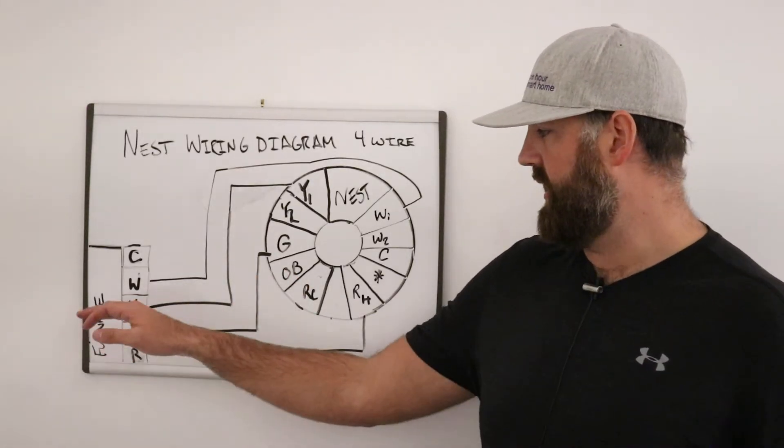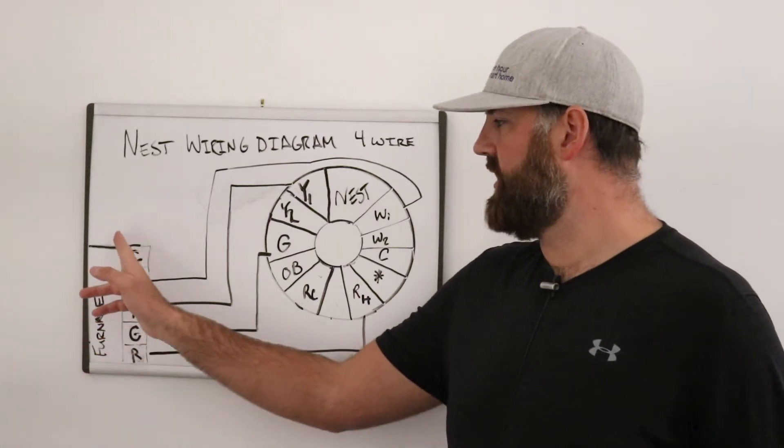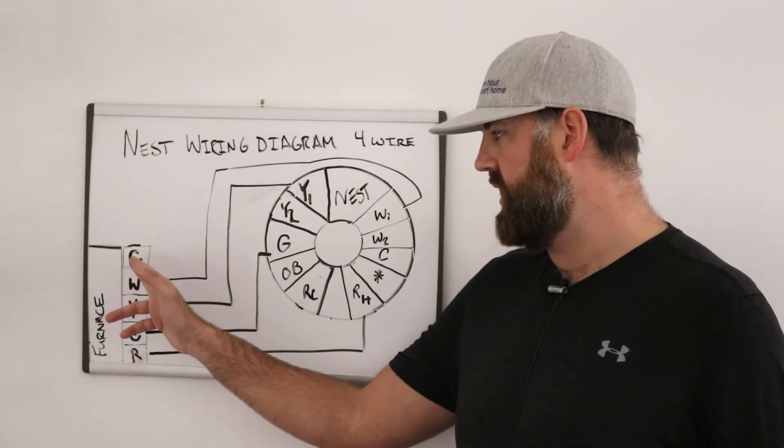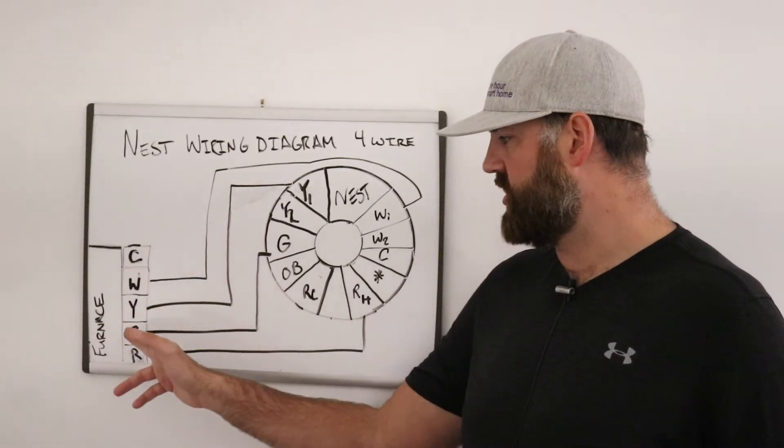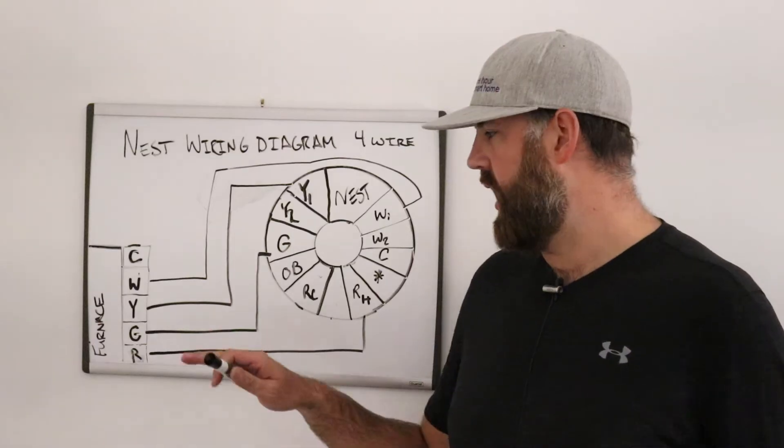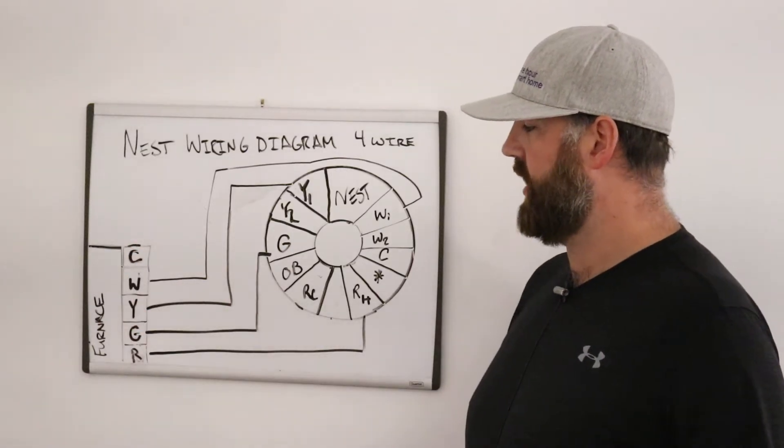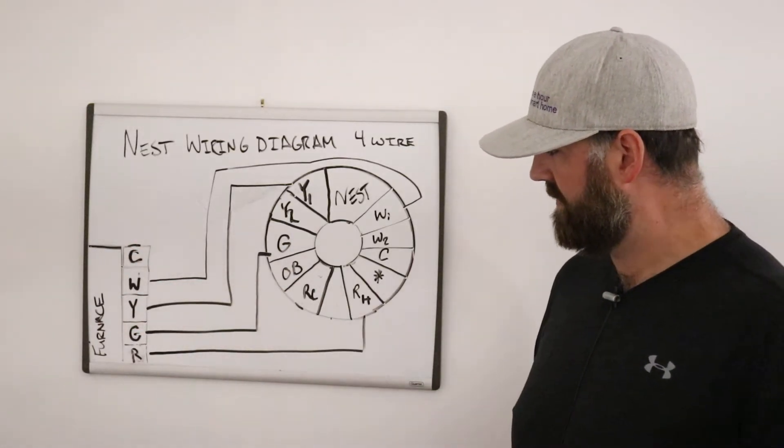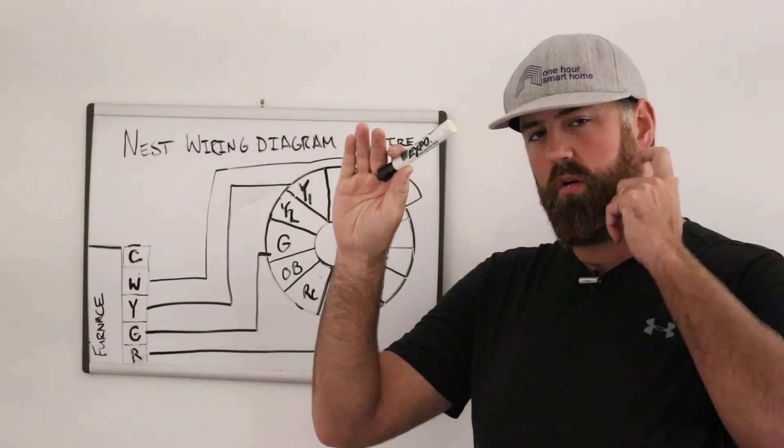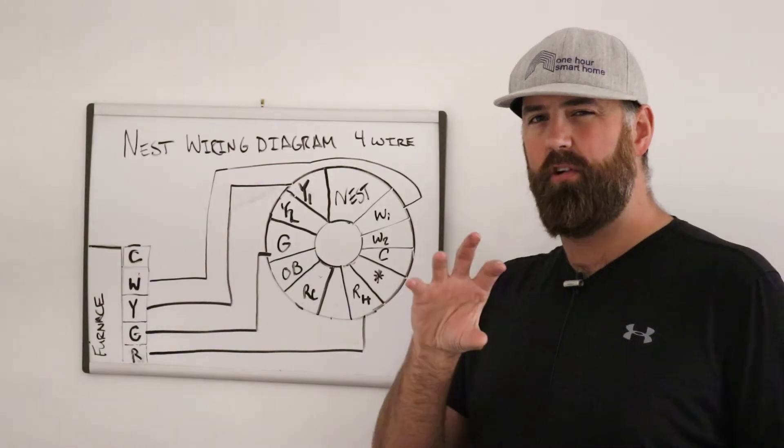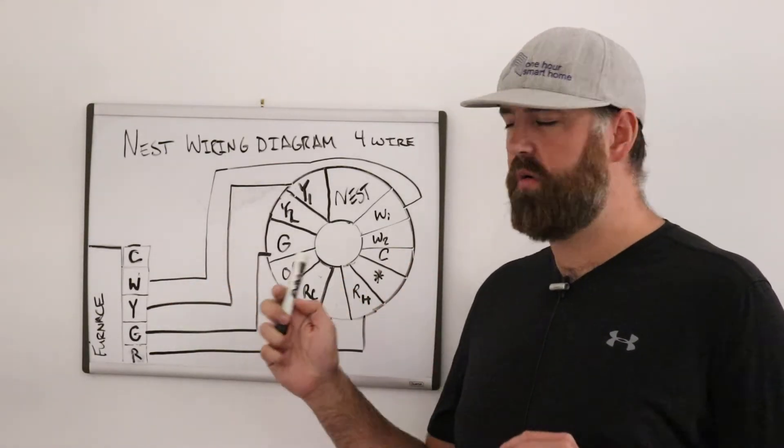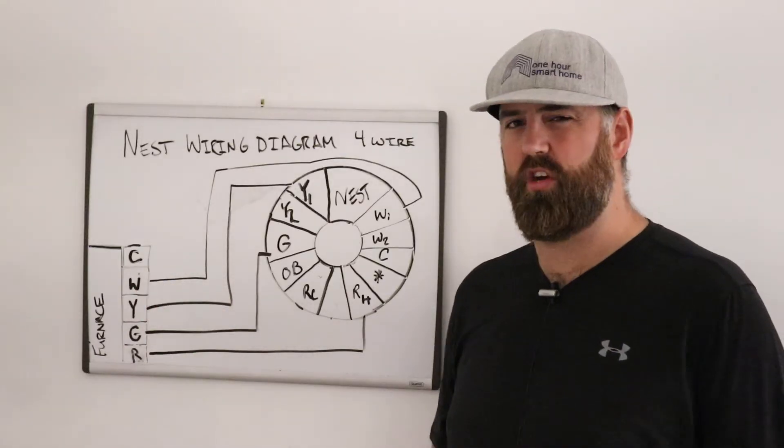If you open up your furnace, make sure that it's off, and inside your furnace, you're going to see a terminal block that will probably have these letters on it, C, W, Y, G, and R, and maybe a couple other letters on them. But you don't really need to know about the other letters if you have a four wire system. But, you could open up your furnace, and usually it's either in the top a little section or the bottom a little section. Wherever you see a circuit board, and then you see the little thermostat wires going to, you can tell which wires go where.